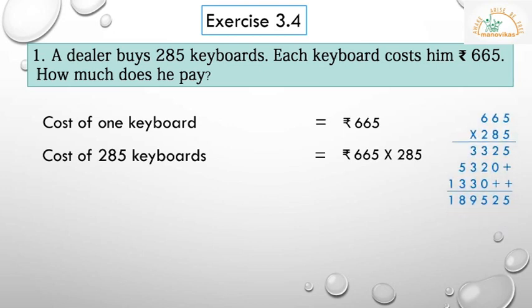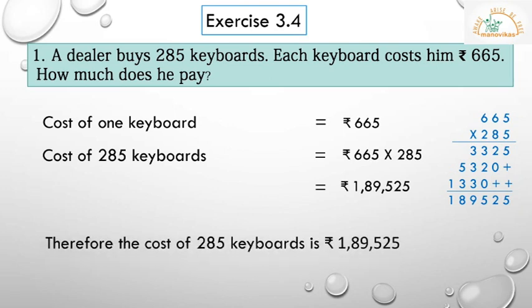The calculation is done in the rough column. Students, you all have to do the rough column in your notebook. So 665 multiplied by 285 gives 1,89,525. Don't forget to write rupees. Therefore, the cost of 285 keyboards is rupees 1,89,525.